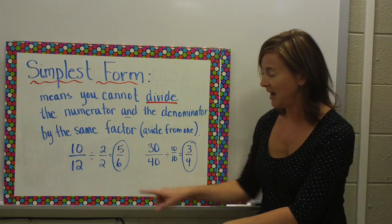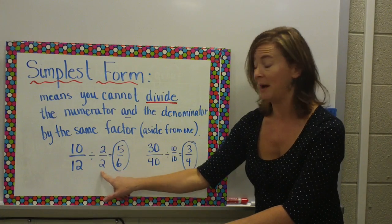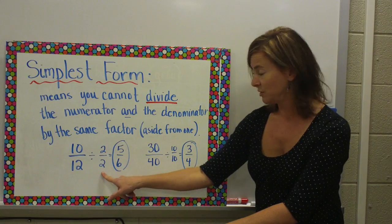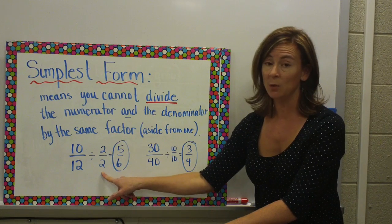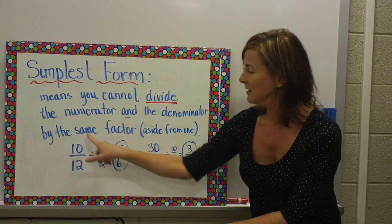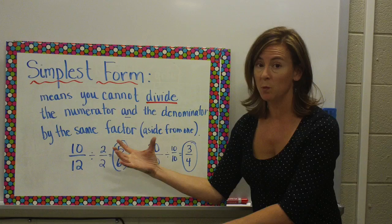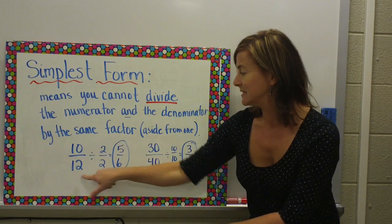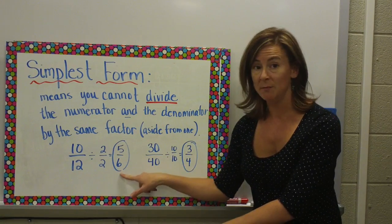Notice that I have to divide both the numerator and the denominator by the same number, so that the fraction remains equivalent, or the same. Technically, I'm dividing this by one, because two over two equals one. So, these are the same amount, just like my candy bars.